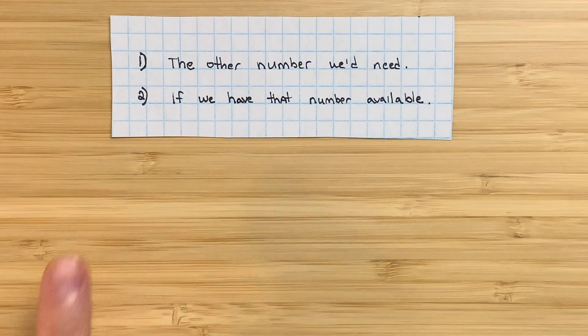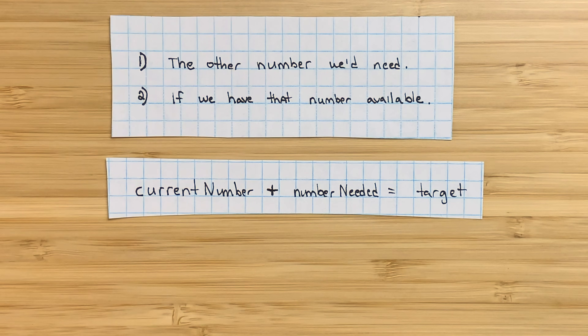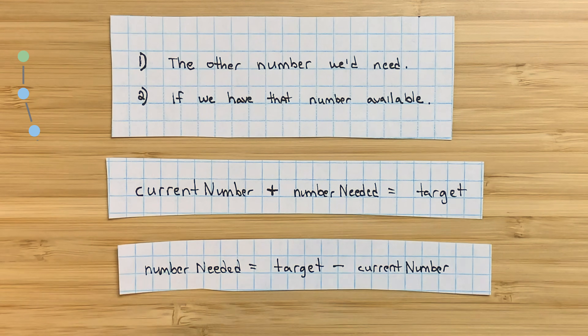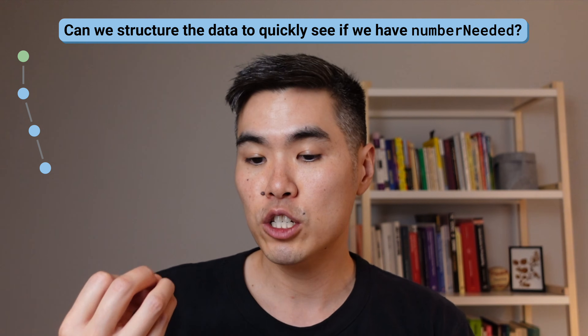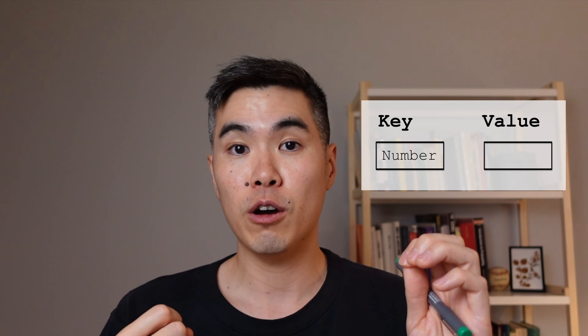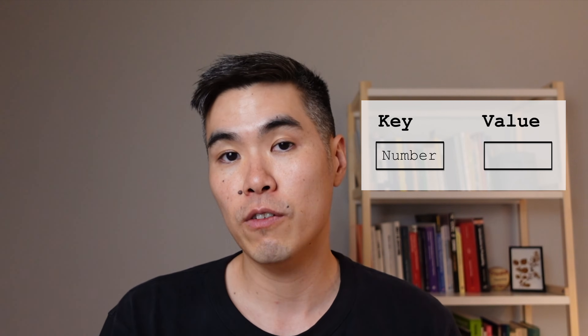Let's think about what's happening at each step. When I see a number, I want to know if it's part of the target pair. With perfect information, I'd also want to know the other number needed to form the target pair. The number we need equals target minus the current number. We can structure the data so we can quickly check if that number is available — a map lets us do that in O(1) time. Storing each number as a key gives us O(n) time overall, with O(n) space for the map.